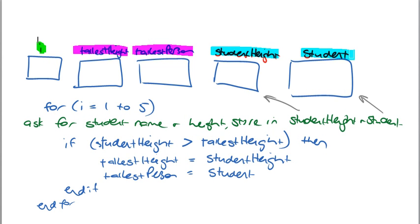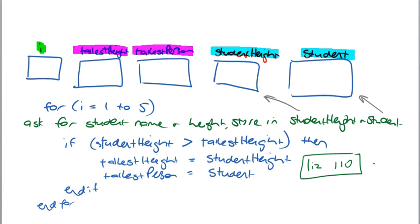Starting through the loop, for the purposes of this exercise, say that our first person's name is Liz and she is 110 — that's her height. That's our first person. To start through the first person, I set up here into my loop.